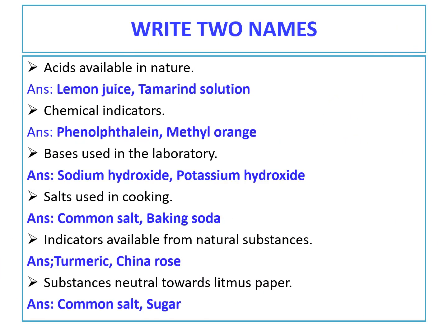Let us move on to the next objective question: write two names. First one — acids available in nature. Many acids are there, so you can write any two names. For example: lemon juice and tamarind solution.